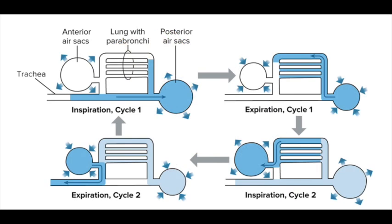When fresh air is first inspired through the bird's nostrils, it travels through the trachea, which splits into the left and right primary bronchi, each leading to a lung. The inspired air travels down each primary bronchus and divides: some air enters the lungs where gas exchange occurs, while the remaining air fills the posterior air sacs. During the first expiration, the fresh air in the posterior air sacs enters the lungs for gas exchange, and the spent air in the lungs flows out through the trachea.